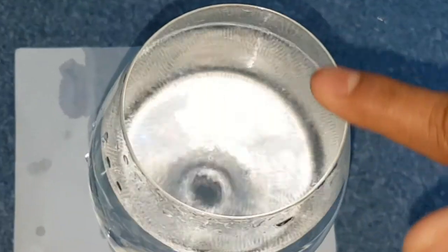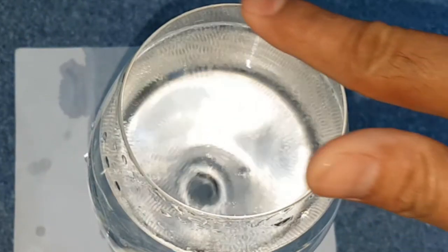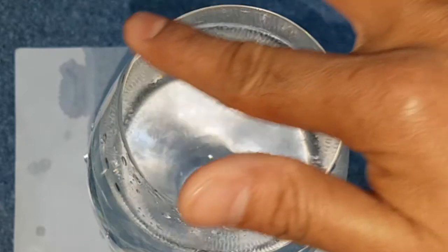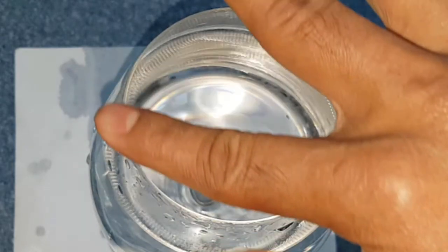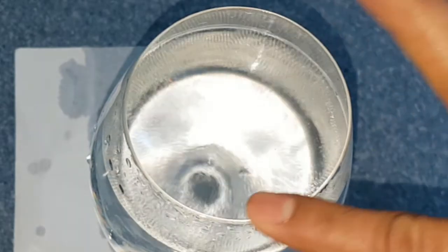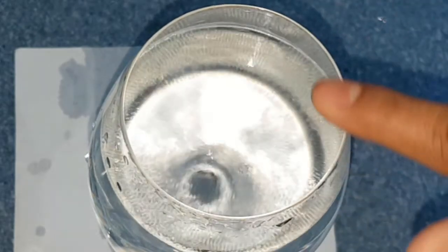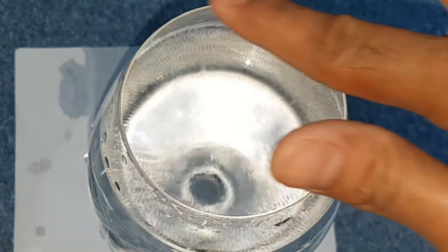When I rub my finger around the glass rim, the glass vibrates itself at its resonant frequency. Because during the rubbing, my finger the glass alternately slips and sticks to the finger. This produces vibration at the resonant frequency of the glass.